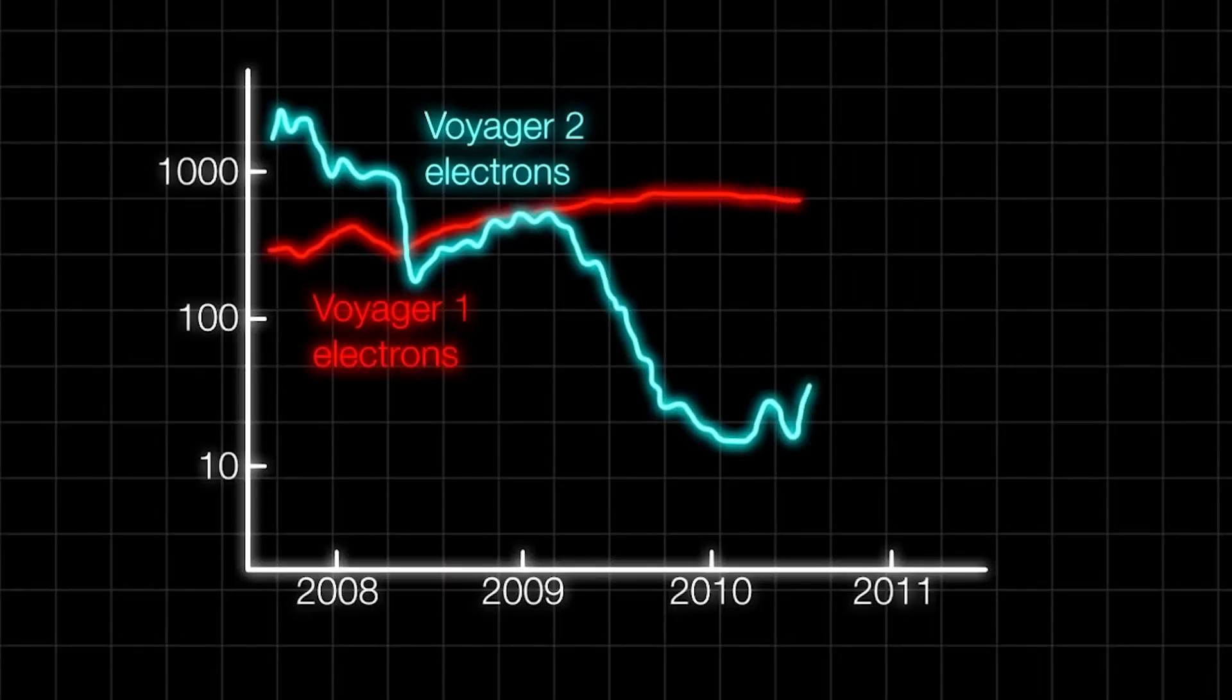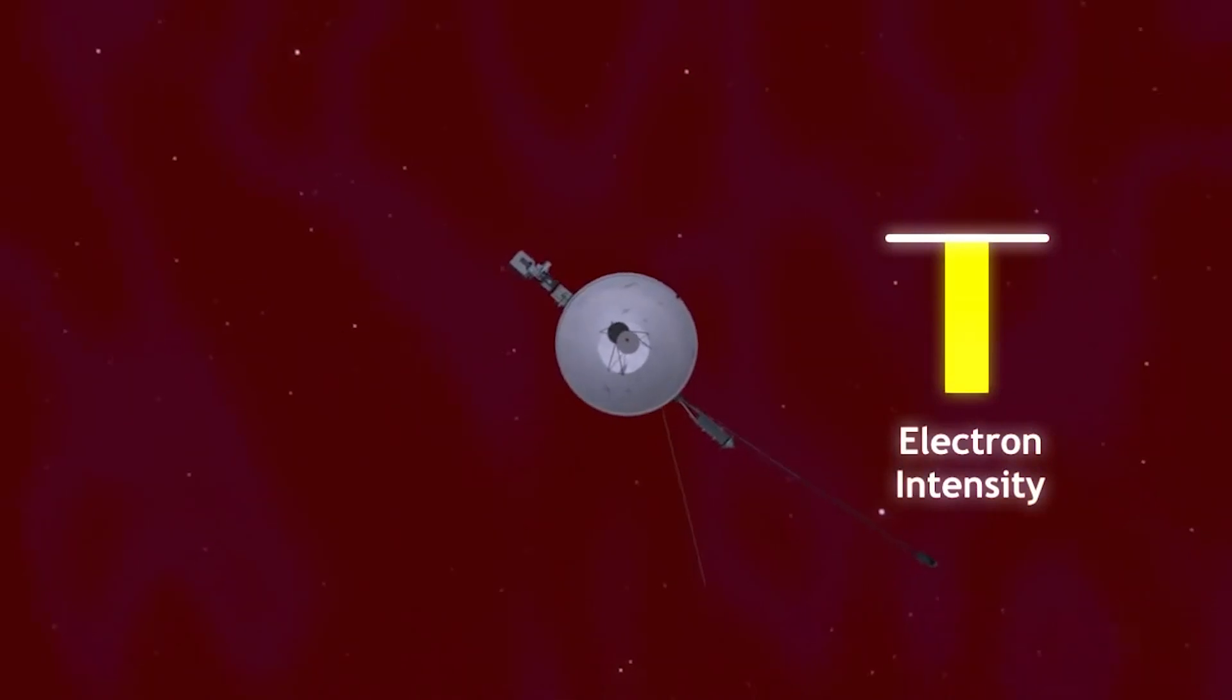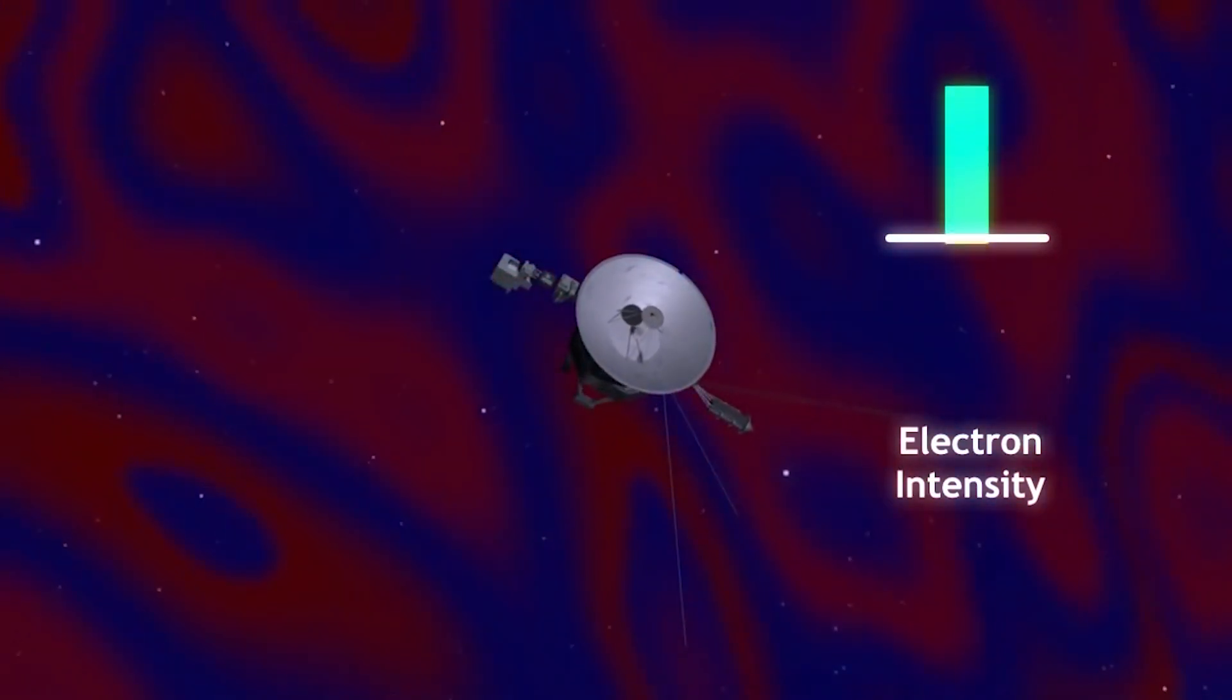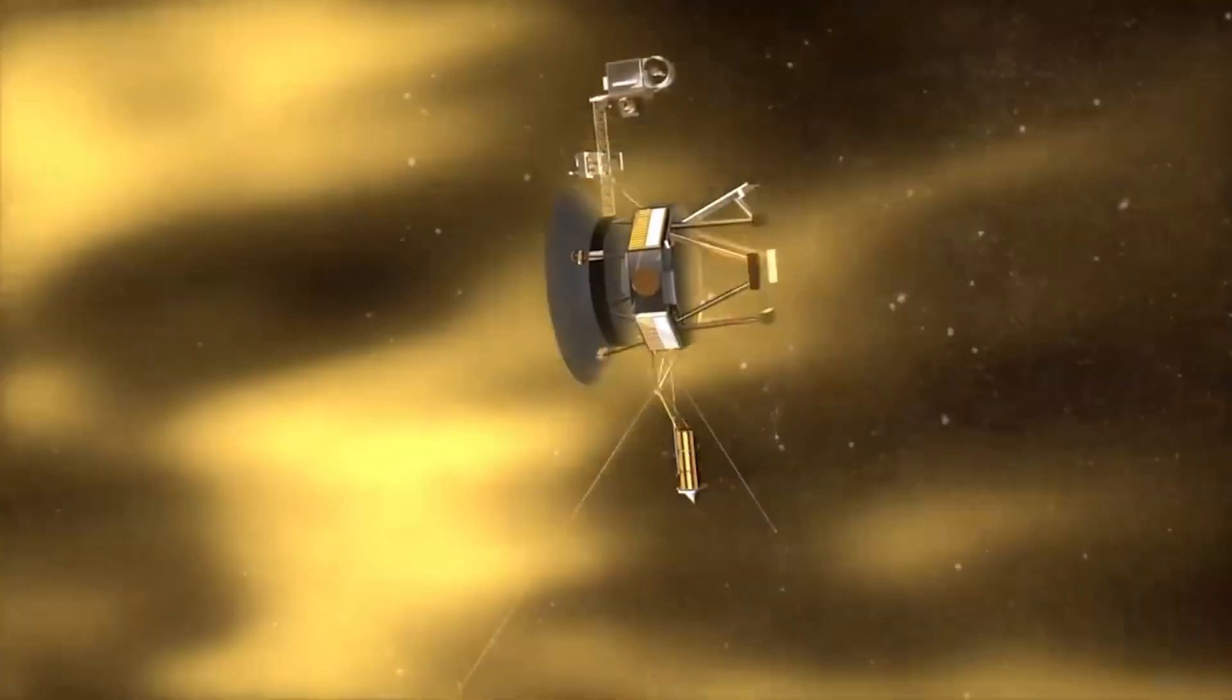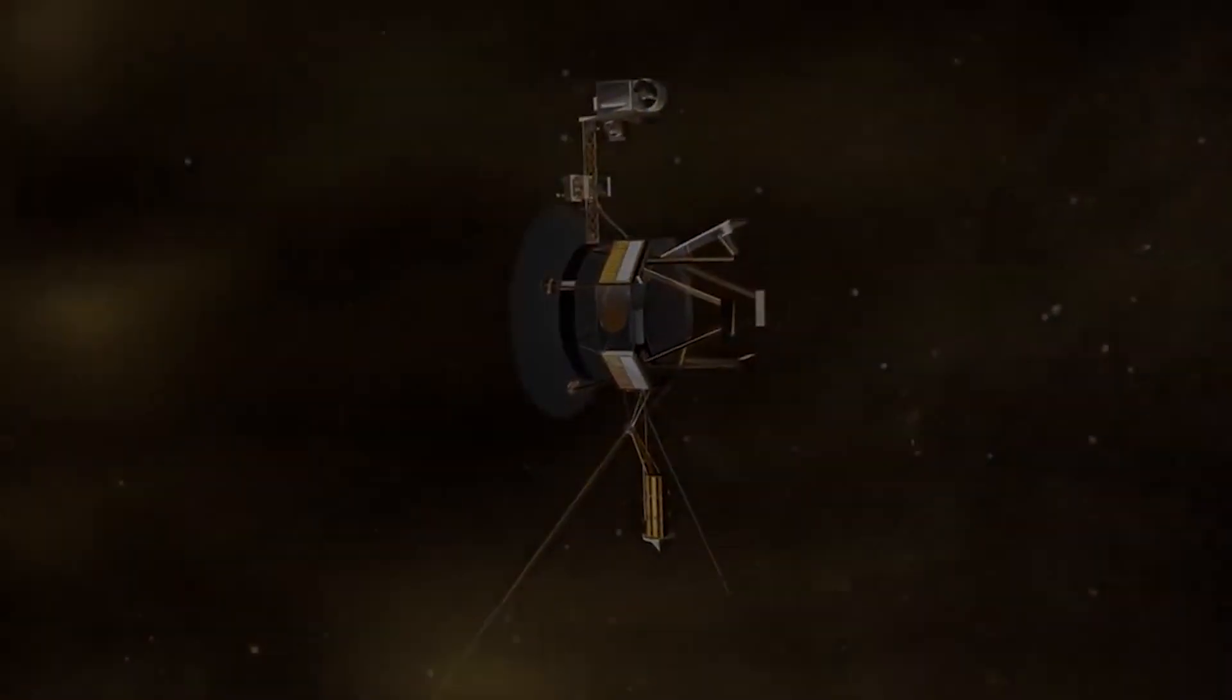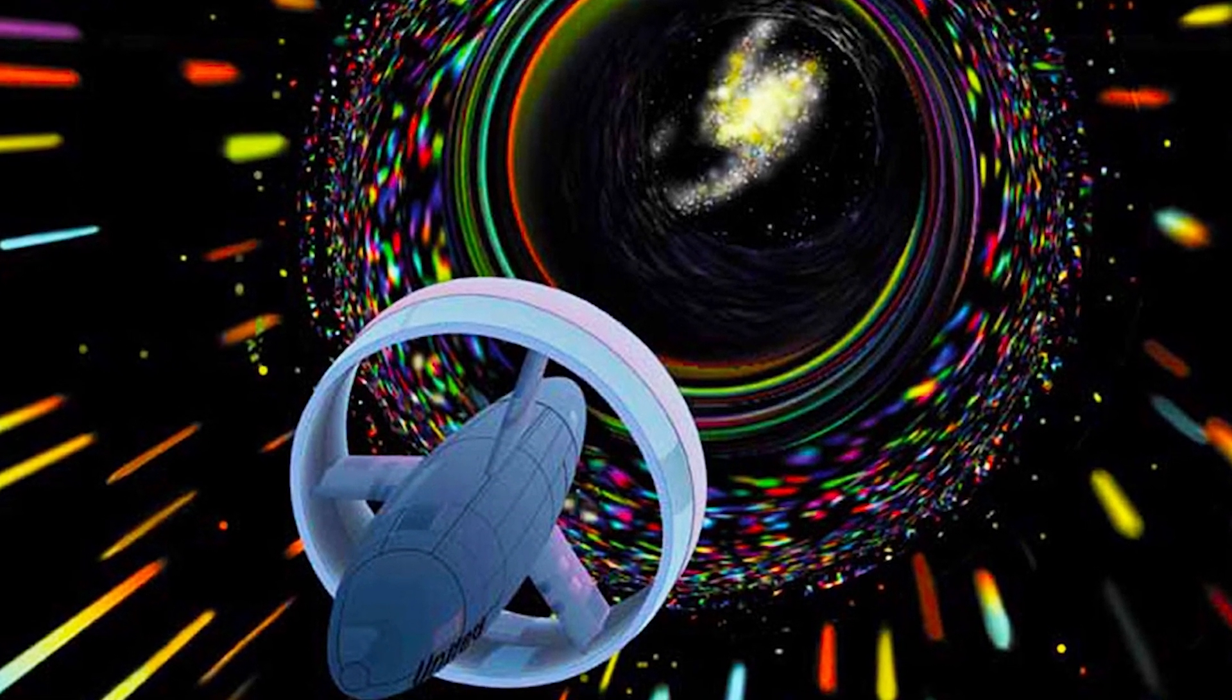Initially, estimates of the distance to the heliopause before the Voyager probes would reach it were inconsistent. However, assuming it to be approximately 50 astronomical units (AU), the mission's funding was increased. Yet, as the spacecraft departed from this significant point, scientists were puzzled by the absence of expected signs of interstellar travel.